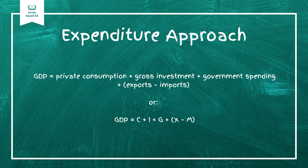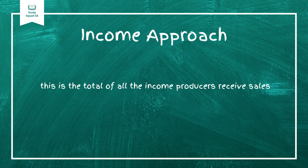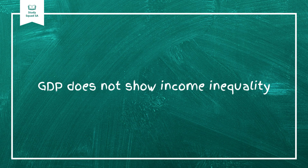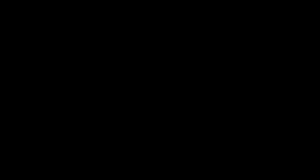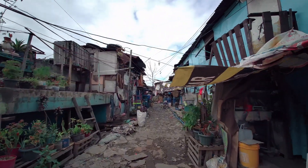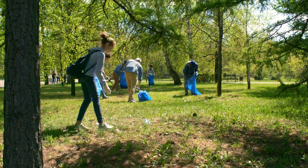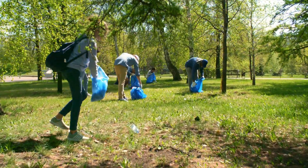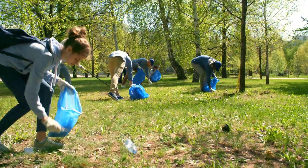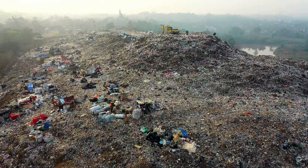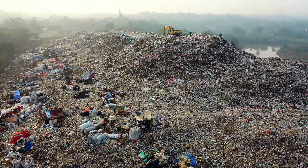Number two: the expenditure approach, which adds up all spending in the economy by households, businesses, the government, and the foreign sector. Number three: the income approach, which adds up all income earned by producers — like wages, profits, and rents. GDP is useful but not perfect. It doesn't show income inequality, doesn't account for unpaid work like volunteering or caregiving, doesn't capture underground economic activities, and doesn't measure environmental sustainability or quality of life.